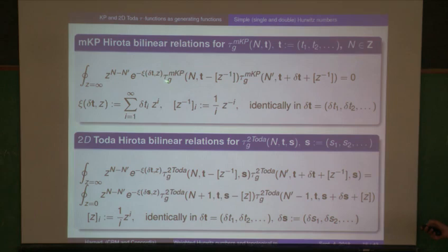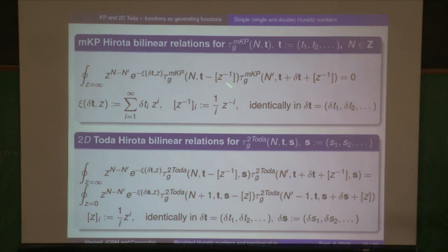The notation is the usual exponential sum — you displace the tau function by two different parameters and set the residue equal to zero; that gives you the bilinear tau function form of the KP hierarchy. The same thing for the 2D Toda: there are two different equations, one involving a residue at zero and the other at infinity, giving this bilinear form. Those two functions satisfy those bilinear relations — an infinite number of them.